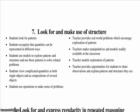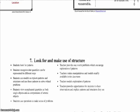They can see complicated things, such as some algebraic expressions, as single objects, or as being composed of several objects. For example, they can see 5 minus 3 times the quantity (x minus y) squared as 5 minus a positive number times the square, and use that to realize that its value cannot be more than 5 for any real numbers x and y.